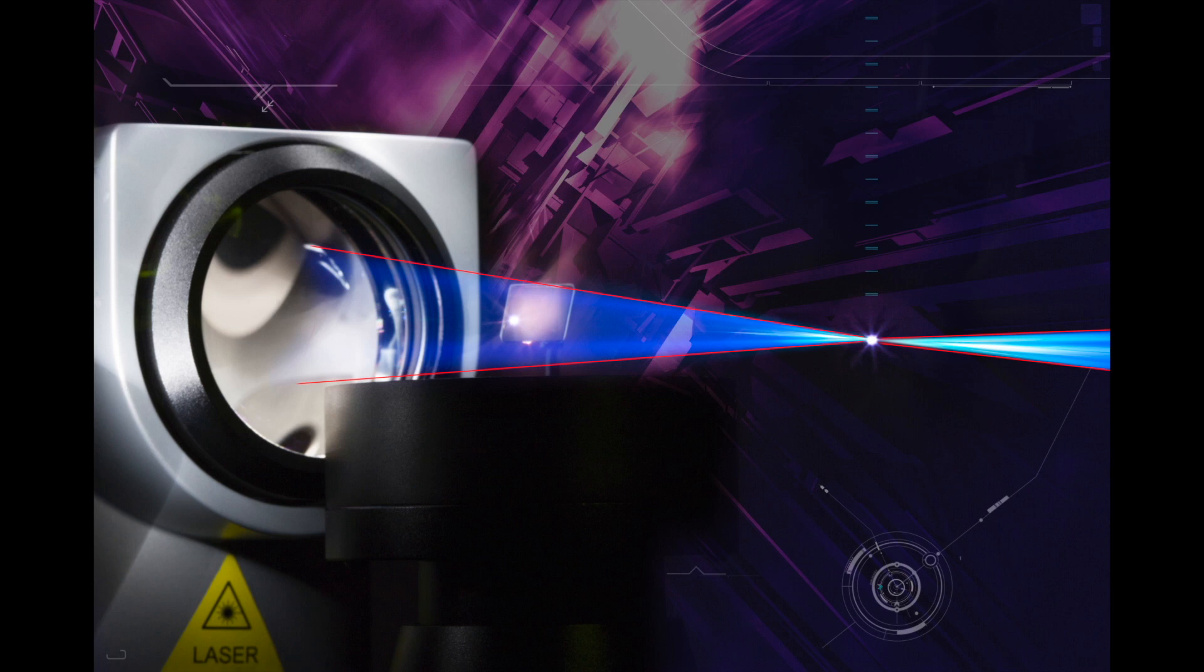A YAG contact lens increases this convergence angle to 24 degrees. On the one hand, they serve to stabilize the eye, and on the other, they have the function of a burning glass to further increase the energy density in the laser focus to achieve plasma formation.